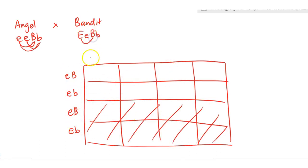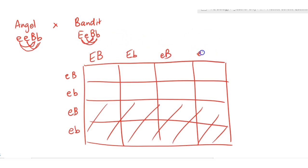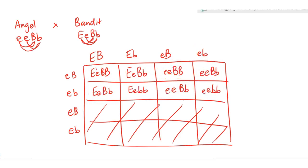Bandit's gametes are: big E big B, big E little b, little e big B, and little e little b. Combining Angel's and Bandit's gametes in the Punnett square, we can see what their offspring will look like — those combinations copied down into the next row as well.